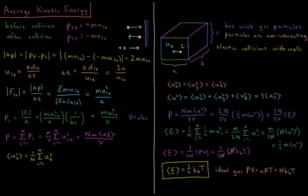To start off, we're going to have a box in three Cartesian dimensions. The length in X will be A, the length in Y will be B, and the length in Z will be C. This box is full of gas particles.